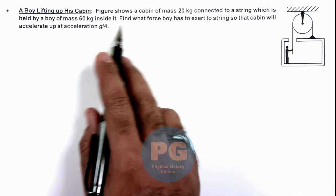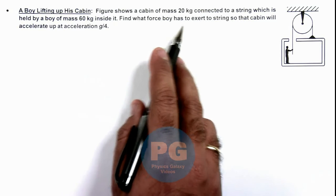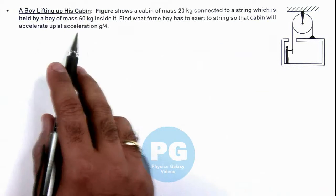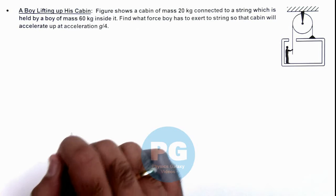We are required to find the force the boy has to exert to the string so that the cabin will accelerate up at acceleration g by 4.